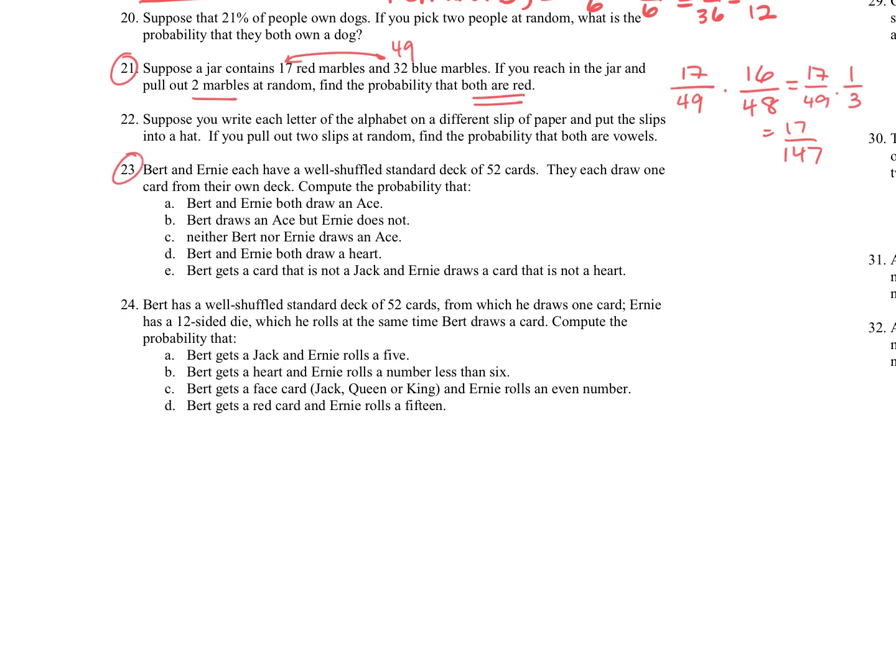For question 23, we have Bert and Ernie. They have a well-shuffled standard deck of 52 cards. They each draw one card from their own deck. Let's look at the probability. So Bert and Ernie are both drawing an ace. So they're two independent, totally separate decks. So drawing an ace would be 4 out of 52 for Bert, and then 4 out of 52 for Ernie. We can reduce those. That's 1/13 times 1/13, which is 1 over 169. Now, the probability that we have Bert drawing an ace, still 4 out of 52, but this time it says Ernie does not. So those are going to be the 48 other cards, still out of 52 because it was his own deck. So that's going to become 192 over 2704, which reduces to 12 over 169.